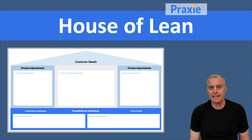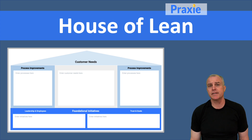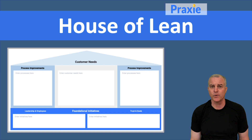The House of Lean is a Six Sigma tool that really helps you understand the elements that need to go into implementing any kind of process in an organization.